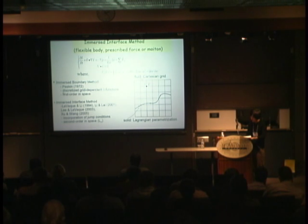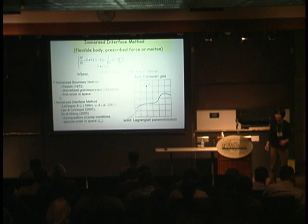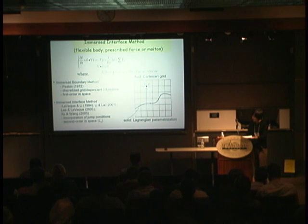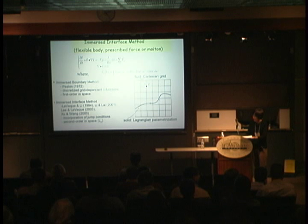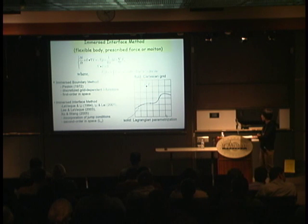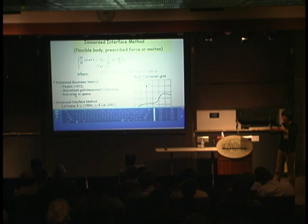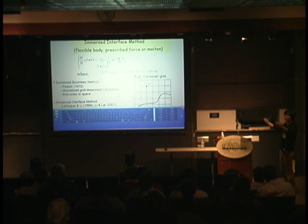One place to improve the method is the resolution or accuracy of resolving the interface. In the original method, there is a singular force distribution — a delta function along the interface — and the question is how to interpolate between this interface and the underlying grid. In the classical method, you approximate this delta function by some finite-size function depending on grid size, which affects the resolution of the interface.